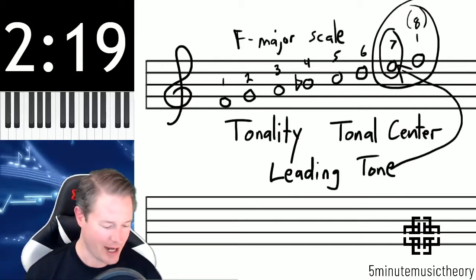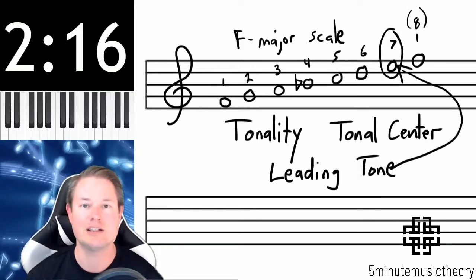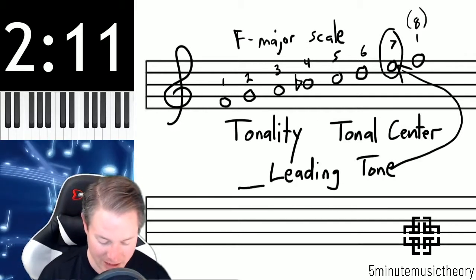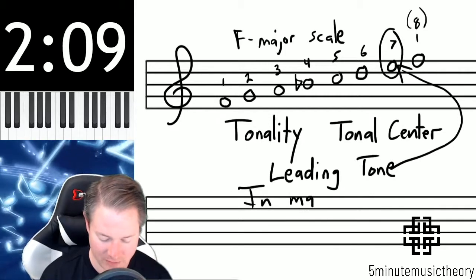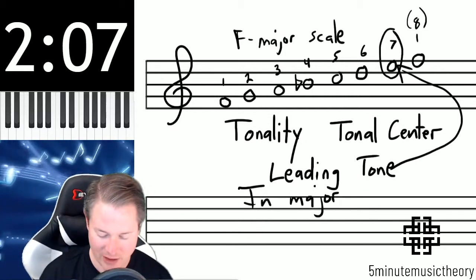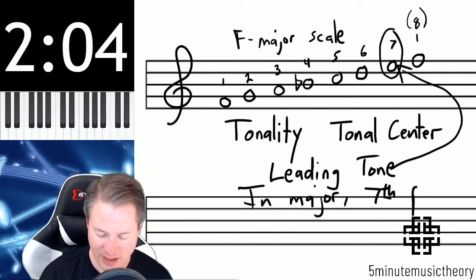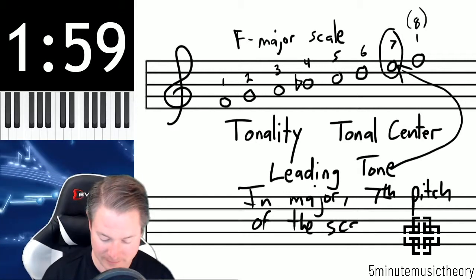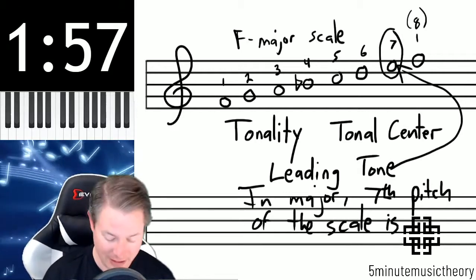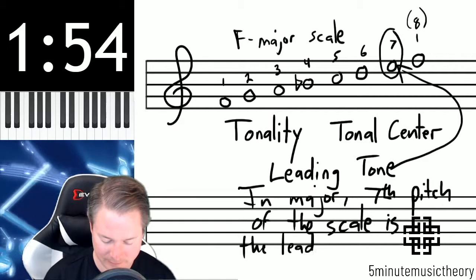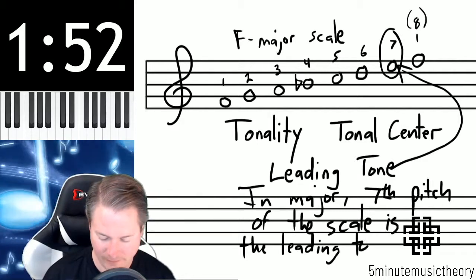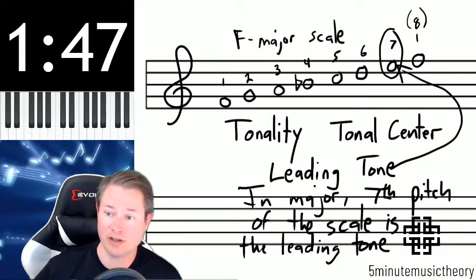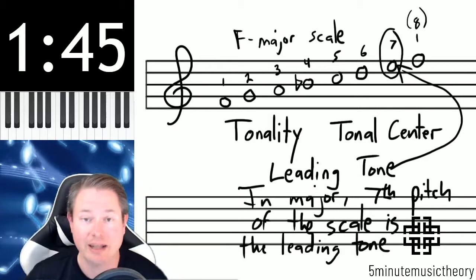That relationship between E and F — that half-step relationship — means they're really close together, and E creates a conflict that is not resolved until we get to F. In major it's pretty easy because the leading tone already exists; it's always the seventh note of the scale. So let's write that: in major, the seventh pitch of the scale is the leading tone. If you're constructing any major scale, find that seventh pitch — the one right before we start repeating — and that's your leading tone.